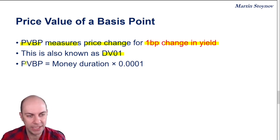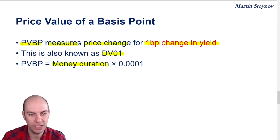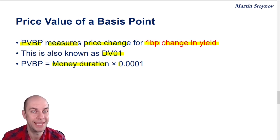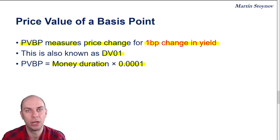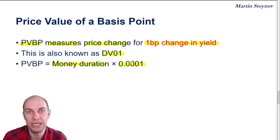How do we calculate the PVBP? We can calculate it directly from Money D. Take your Money D and multiply it by 1 over 10,000, or 0.0001. That's the number because that is actually 1 basis point expressed in decimal terms.